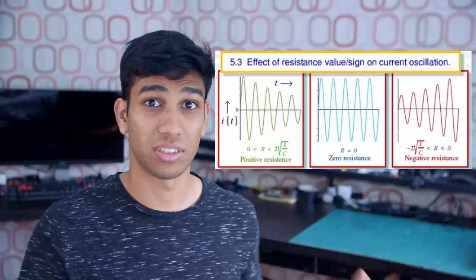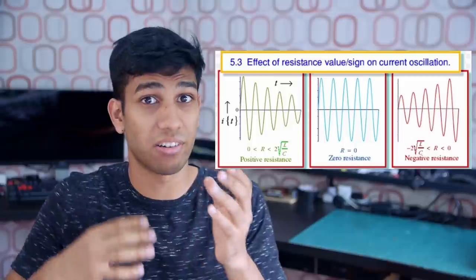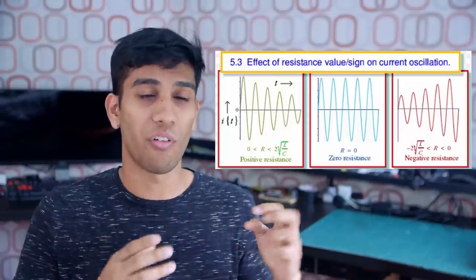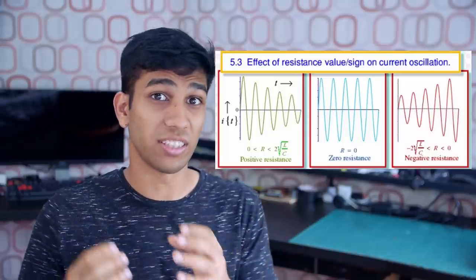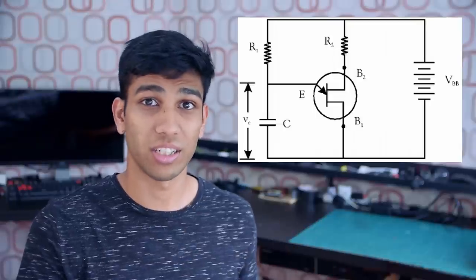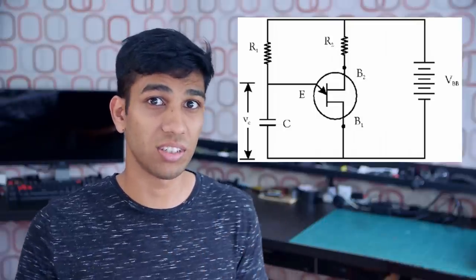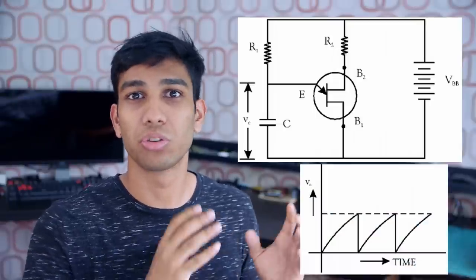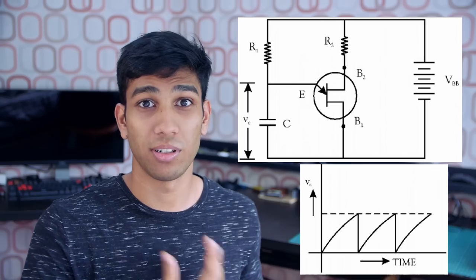We have the negative resistance oscillators that use the negative resistance characteristics of electronic devices such as tunnel devices. We also have the UJT relaxation oscillators that use both capacitors and resistors to create those saw-tooth waveforms.